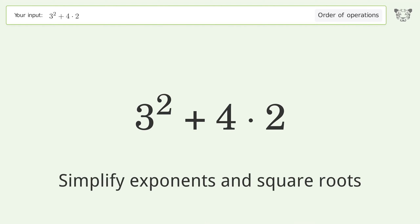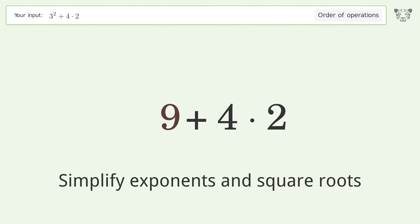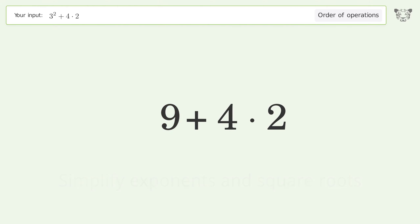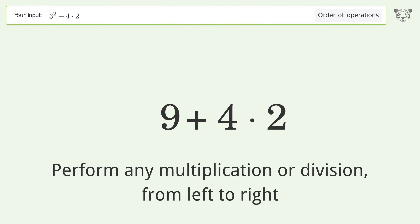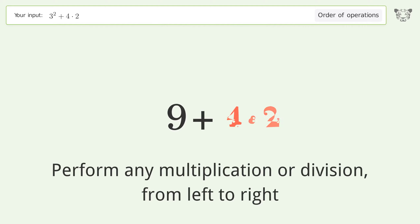Simplify exponents and square roots: 3 to the power of 2 equals 9. Then perform any multiplication or division from left to right: 4 times 2 equals 8.